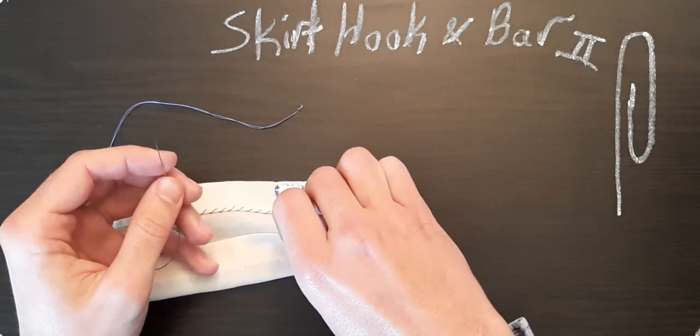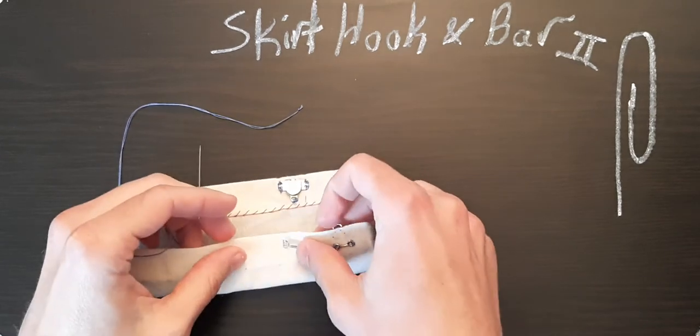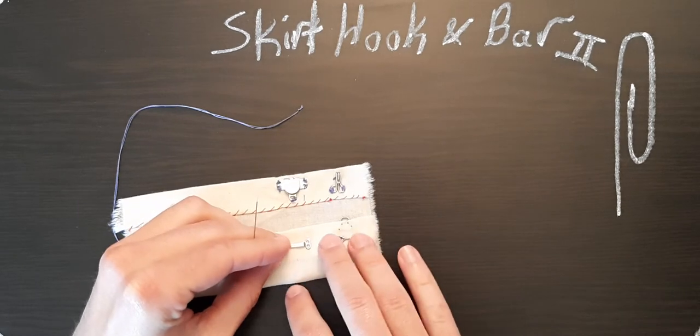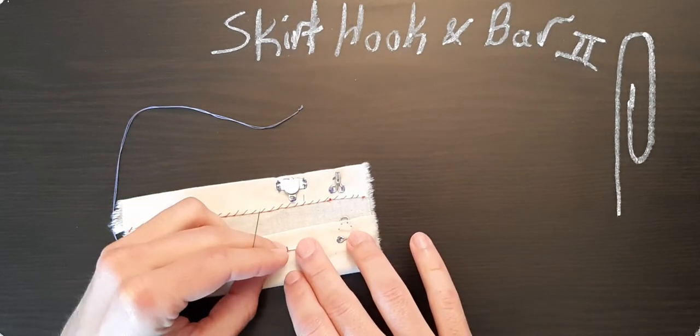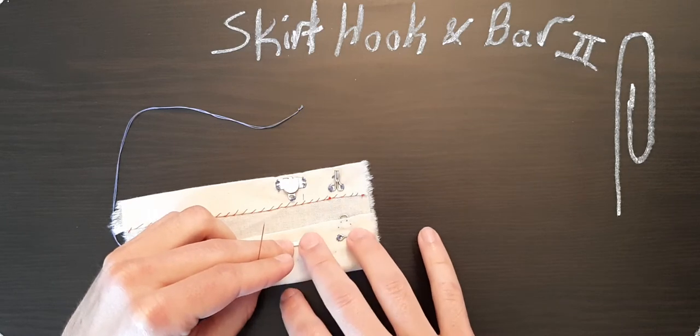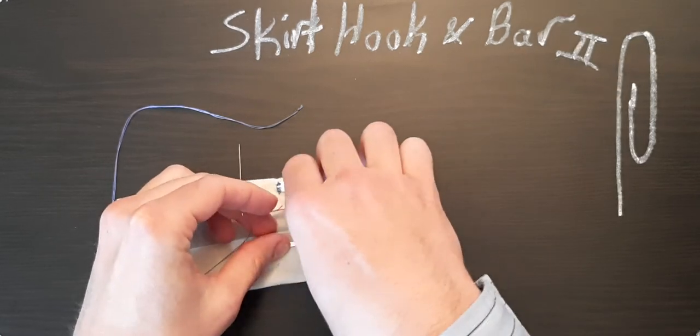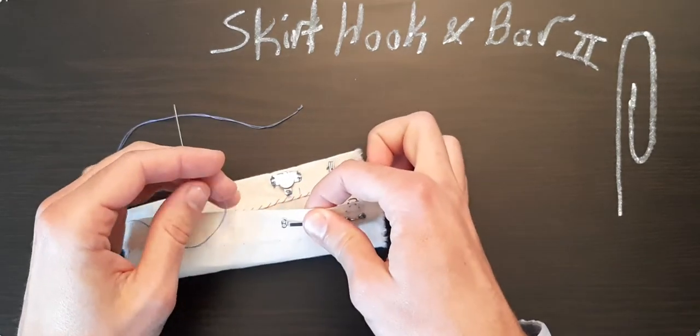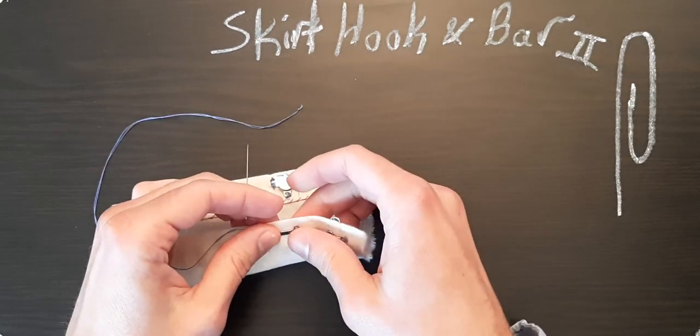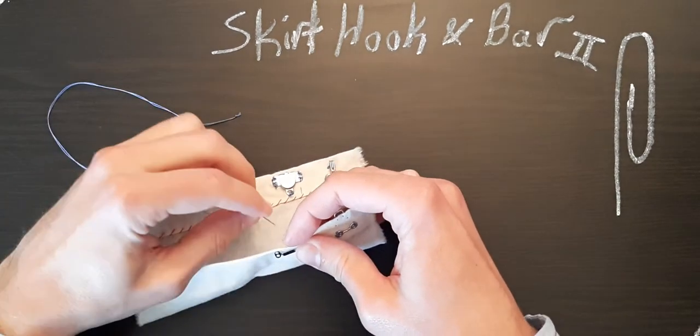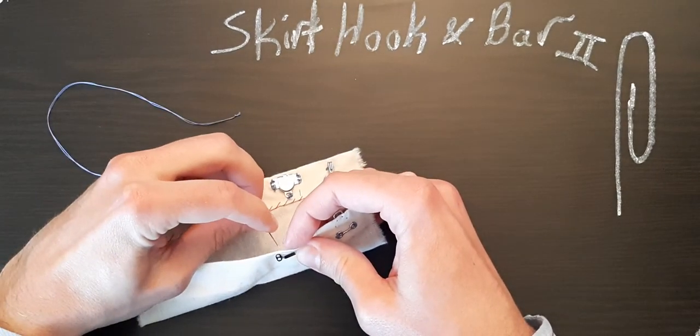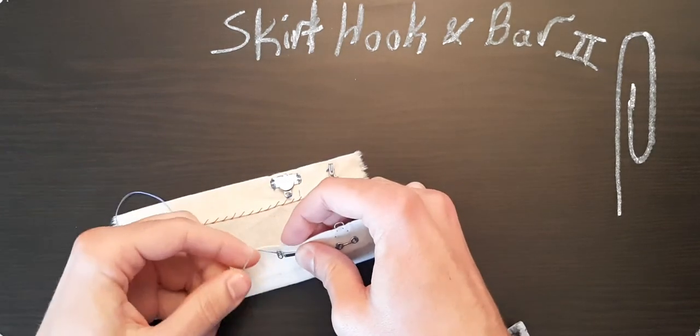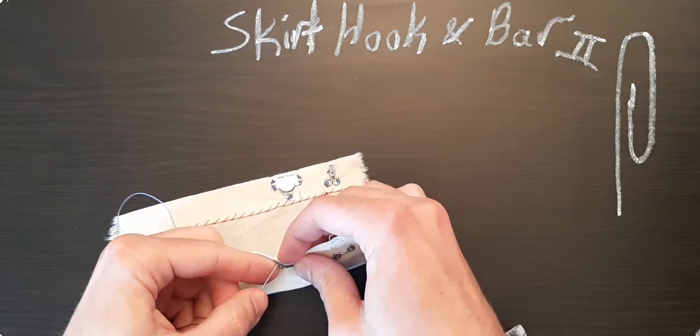Okay, so I already have my needle double threaded and knotted off, so we are able to begin. I'm just going to double check my placement real quick, make sure that this is where I want it. Okay, looks appropriate. Very good. So until we get a couple of stitches in, we're going to have to securely hold our bar right here. You can also take a bit of tape or something just to hold that in place.